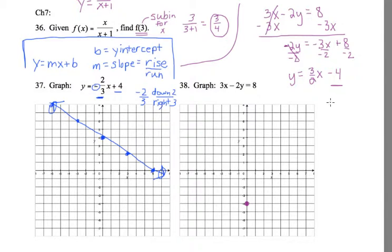Then my slope number, my m number, is 3 halves. I make that into a fraction. It's already a fraction. The top number tells my rise. The bottom number tells my run.